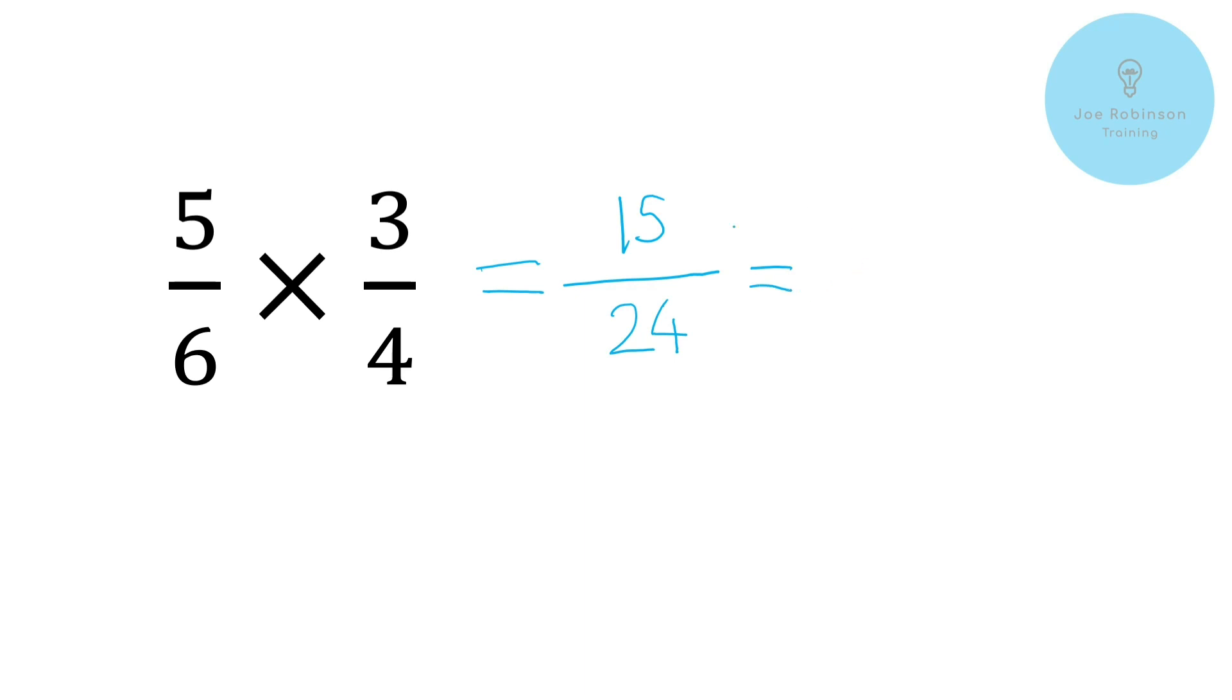Now my brain's working overtime trying to think if these are both divisible by the same number. Hopefully you're way ahead of me and you've already spotted that. But you can see here we've got 15 24ths. So once again just start off with the smallest prime number. So 15 won't divide by 2 because you'll get not a whole number. We've got the next number up is 3. So will 15 divide by 3? Well yes it will. Will 24 divide by 3? Yes it will.